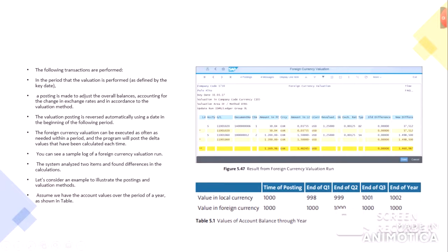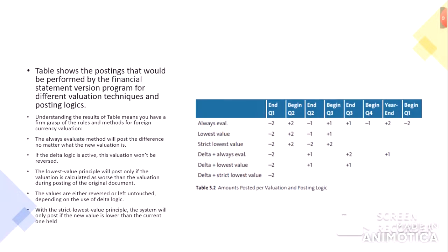The values of the account balance through the year: at the time of posting in local currency the foreign currency is 1000; at end of quarter one it is 998; end of quarter two it is 999; end of quarter three it is 1001; end of the year it is 1002. Understanding the results of this table means you have a firm grasp of the rules and methods for foreign currency valuation. The always evaluate method will post the difference no matter what the new valuation is.